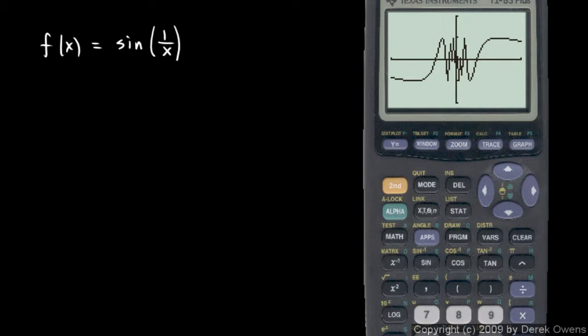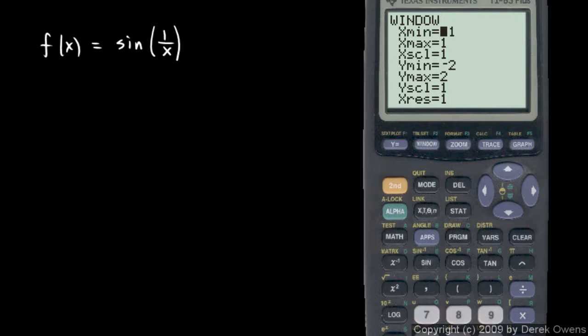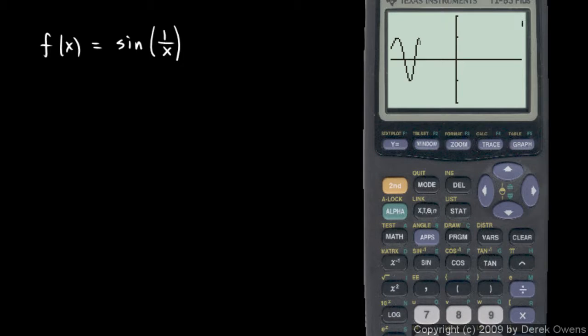It still looks like something's going on near the origin, so let's zoom in. This graph is a sine function, so it's always going to be between negative 1 and 1. I'm not going to mess with the vertical values on the window, but I'll change the x values. I'll tighten them up some. Instead of negative 1, let's say negative 0.1, and x max is positive 0.1. We'll graph that.